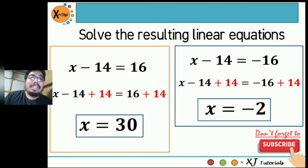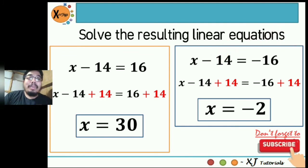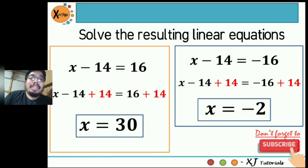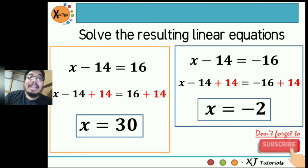Second equation: x minus 14 equals negative 16. Add 14 to both sides: x minus 14 plus 14 equals negative 16 plus 14. The sum of negative 16 and 14 is negative 2. So x equals negative 2.